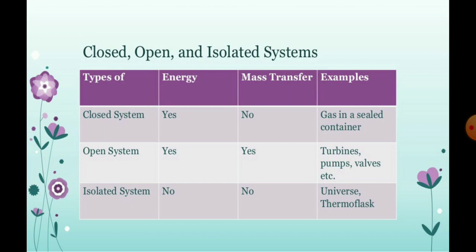There is a chart we can plot here between the closed, open, and isolated system. If we consider the closed system, then the energy will transfer, mass does not transfer, and the example is gas in the sealed container. If we consider the open system, there is transfer of energy, there is also transfer of mass, and the example is turbine, pumps, and valves. As we have explained, there is isolated system in which there is no energy transfer and no mass transfer. The whole universe and the coffee placed into the well insulated flask is the example of the isolated one.